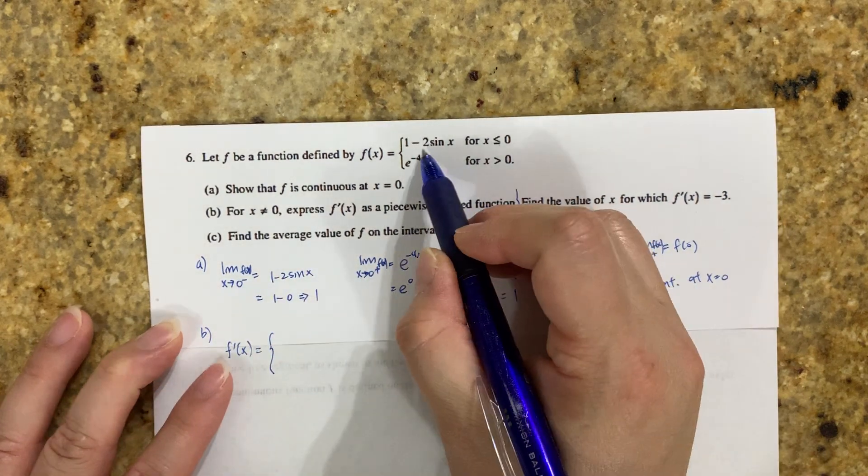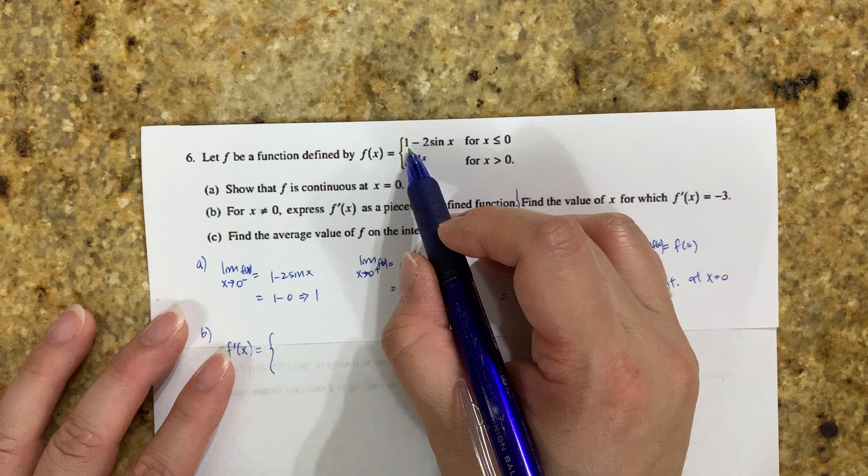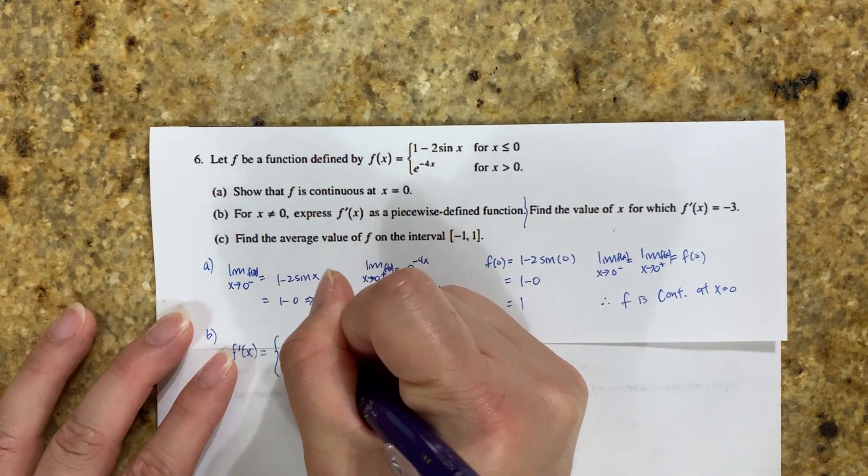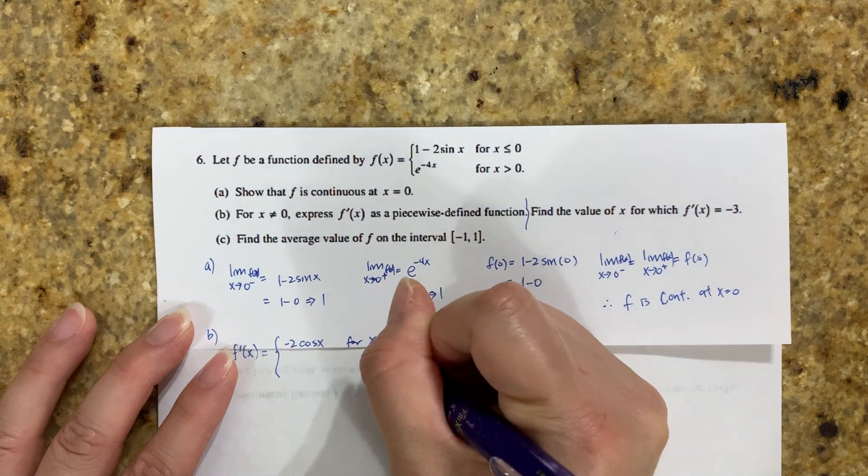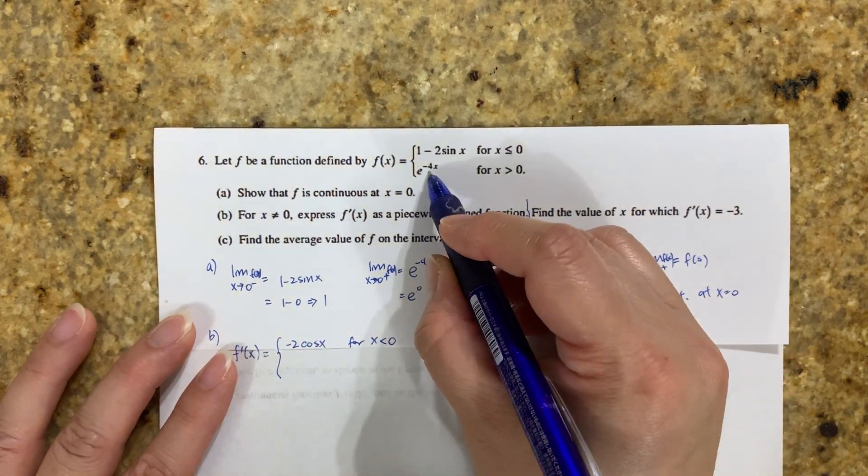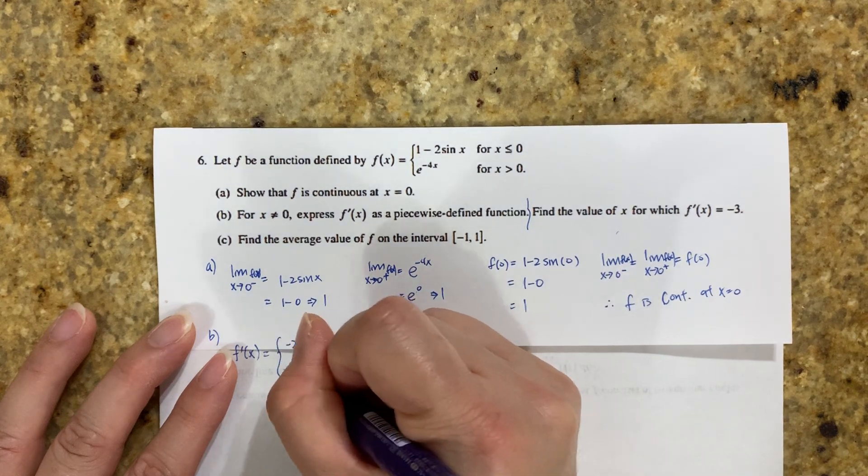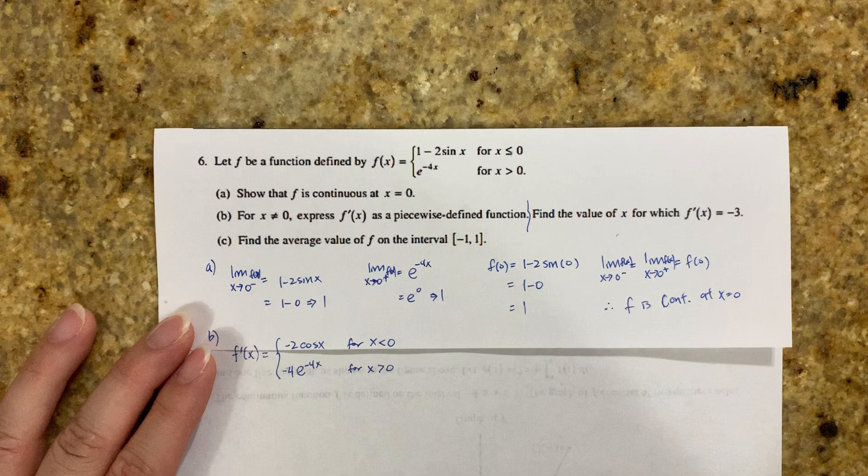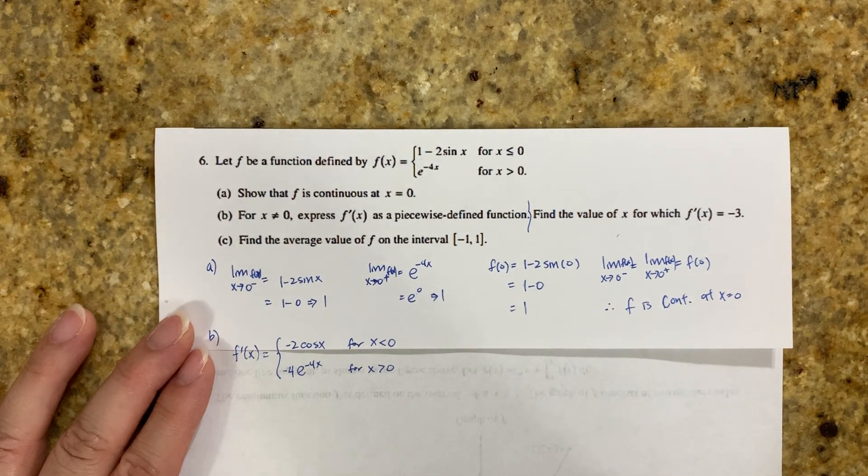f' equals, for the first piece, derivative of -2sin(x) is -2cos(x) for x < 0. The second piece derivative is -4e^(-4x) for x > 0. So that's my piecewise function for f'.